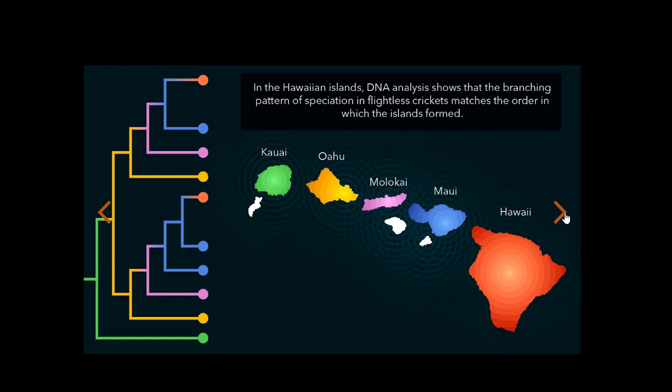In the Hawaiian Islands, DNA analysis shows that the branching pattern of speciation in flightless crickets matches the order in which the islands formed.